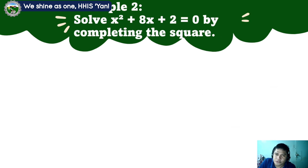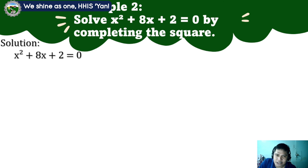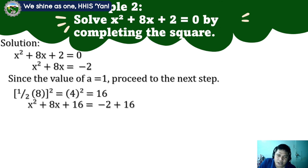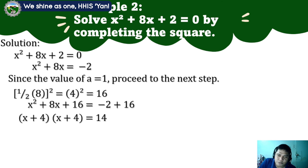Let's proceed to example 2. Solve x squared plus 8x plus 2 equals 0 by completing the square. Step 1: x squared plus 8x equals negative 2. Since a equals 1, proceed to the next step. Step 3: since b is 8, one half of 8 is 4. Squared: 4 squared equals 16. Add 16 to both sides: x squared plus 8x plus 16 equals negative 2 plus 16.